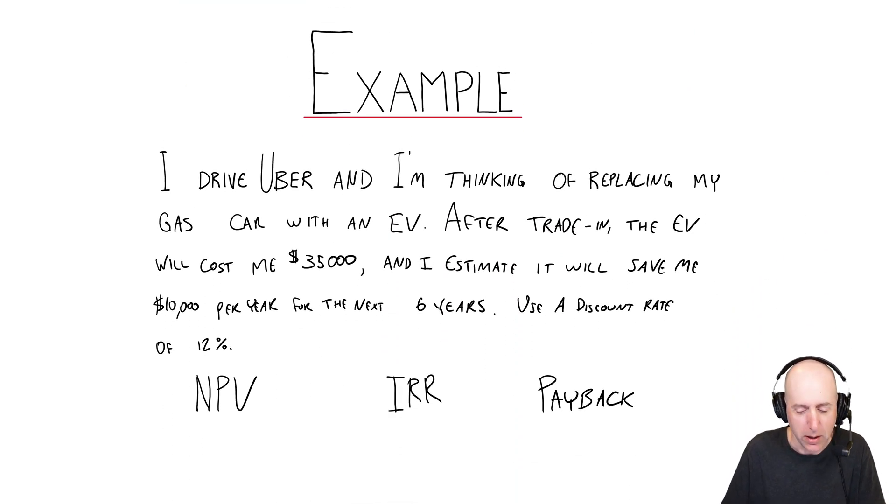I drive Uber, and I'm thinking of replacing my gas car with an EV. After trade-in, the EV is going to cost me $35,000 out of pocket today. I estimate that it's going to save me $10,000 a year for the next six years. By the way, these numbers are totally made up. If you are an EV superfan and I've underestimated this, too bad. If you're a gas lover and I've overestimated the savings, too bad for you, too. This is just back of the napkin guesswork calculation to serve a finance problem.